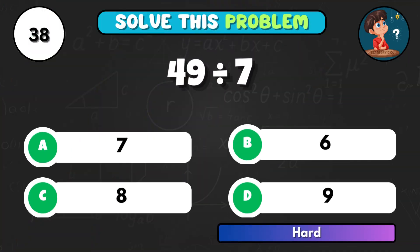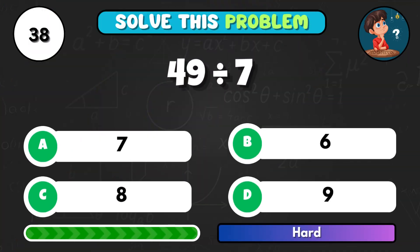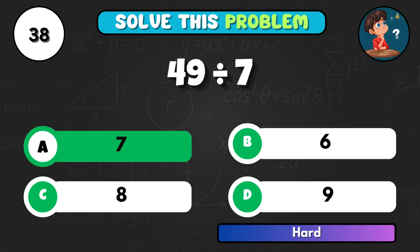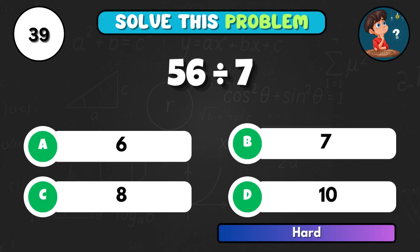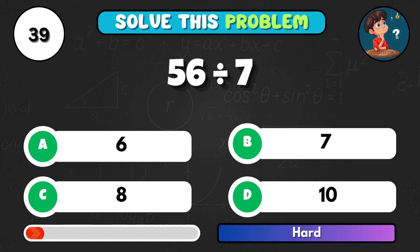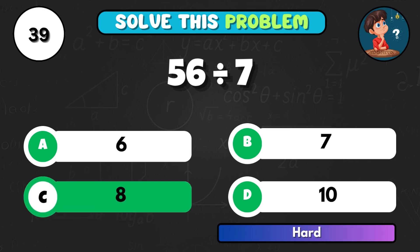Now for the 7's, 49 divided by 7. That's A equals 7. 56 divided by 7, what do you get? Option C equals 8.